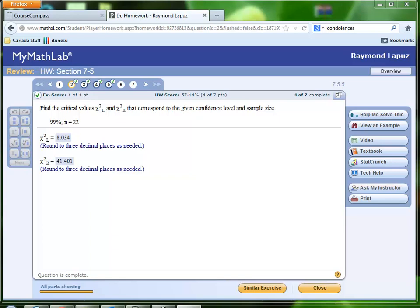This is a problem that we had already done, and it's asking us to find critical chi-square left and right values that correspond to the confidence level of 99% and a sample size of 22.